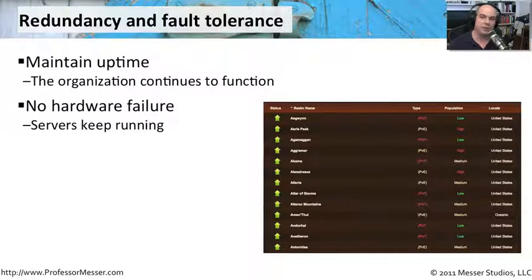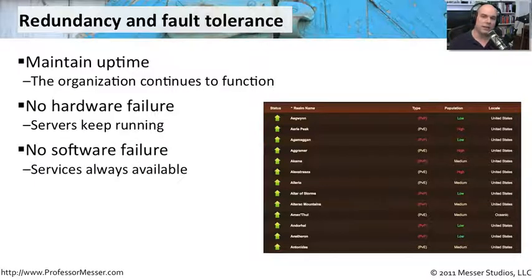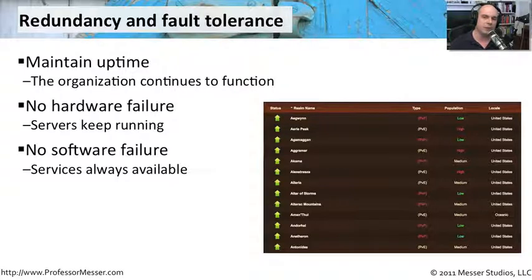We need to make sure, for instance, that we don't have a hardware failure. We may want to have redundant servers, or within a single server, we may want to have redundant power supplies. By keeping those redundancies, if we happen to lose a power supply or a motherboard in a server, we've got another one ready to take its place to keep things up and running. We also need to think about the software running on these systems — software that can notify us of problems, or work in a cluster so that if one piece of software fails, others on the network can pick up the slack.